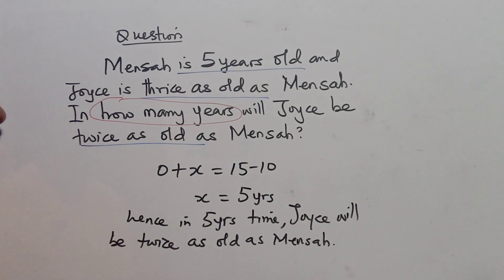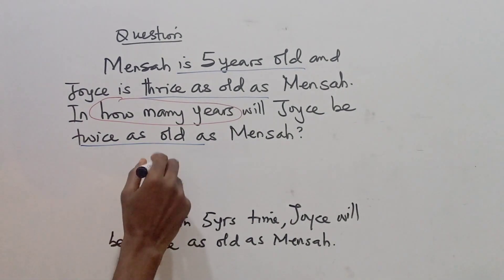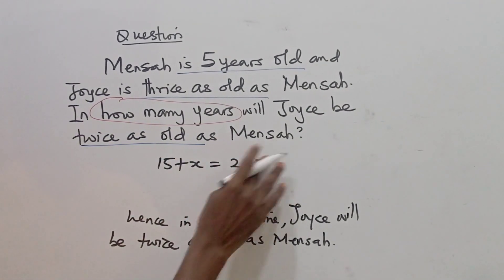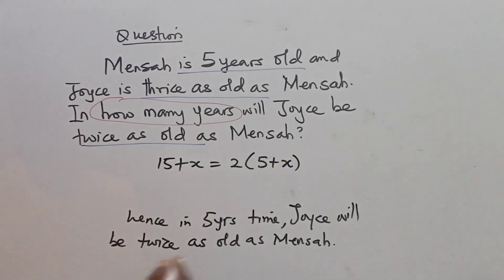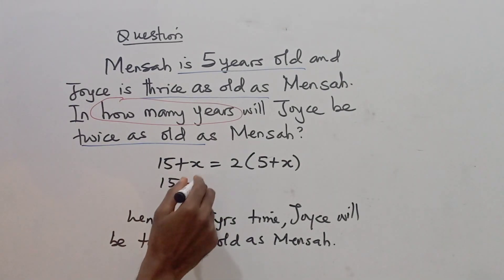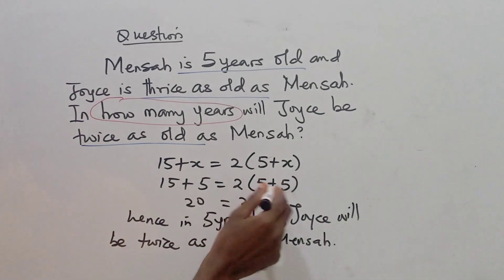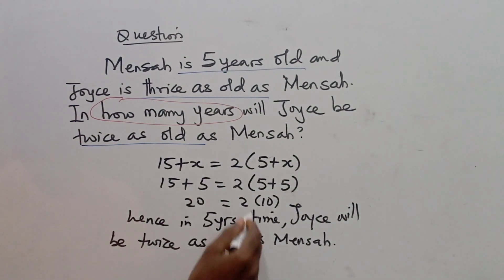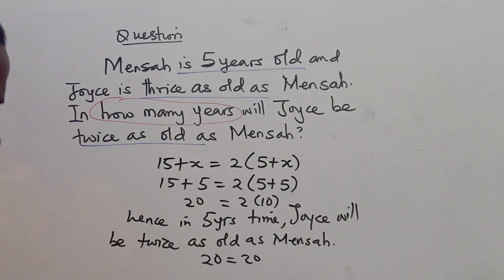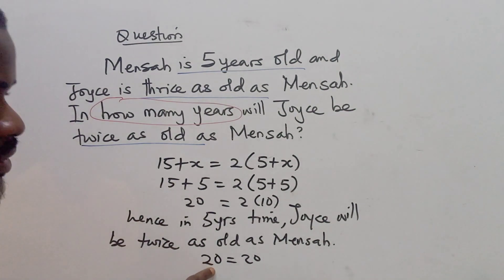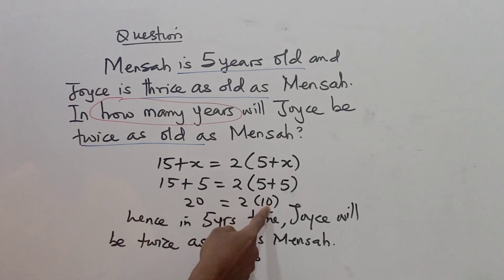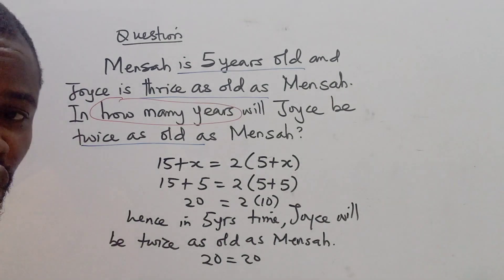But you can also check it to verify. Using the relationship 15 plus x equals 2 times 5 plus x, substituting x equals 5: 15 plus 5 equals 2 times 5 plus 5. So 20 equals 2 times 10, which is 20. This confirms that in 5 years time, Joyce will be 20 years and she is twice as old as Mensa, who will be 10 years. That gives us all the solutions to this problem.